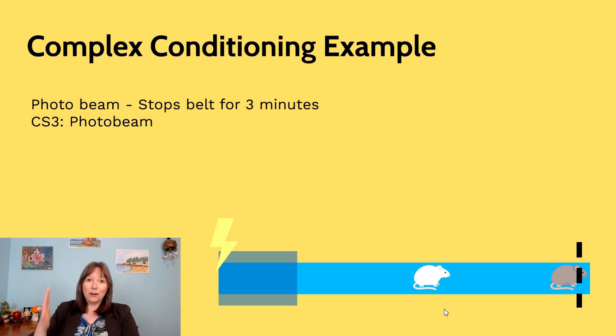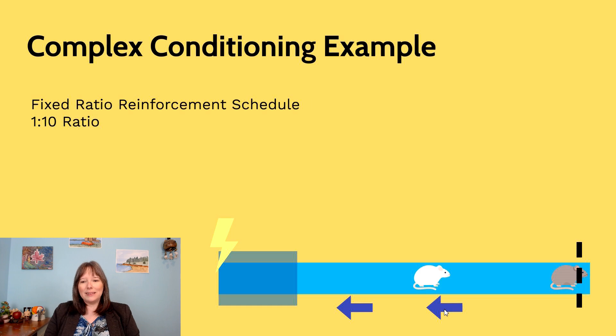They start to associate the photo beam with the conveyor belt changing. And by crossing the photo beam they are negatively reinforced and the conveyor belt stops moving. So then they don't get in the dark box and then they don't get the electric shock.